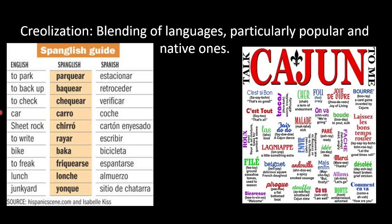And then there's also creolization — the blending of languages, particularly popular in native language. Two examples of this are Spanglish and Cajun. Spanglish is a mix of English and Spanish — so 'to park,' the verb, is like 'parkiar,' kind of starting like the English word but ending like a Spanish verb. Cajun uses a mix of French and English terms and native languages in Louisiana, which prominently has a lot of French culture because of previous French colonization before 1803. That creates Cajun.